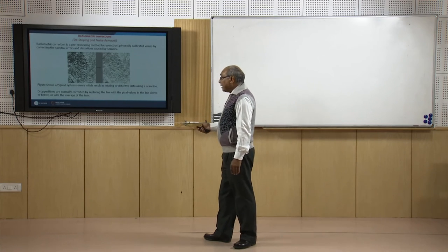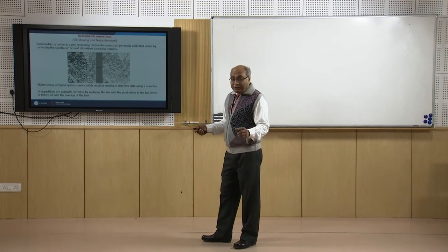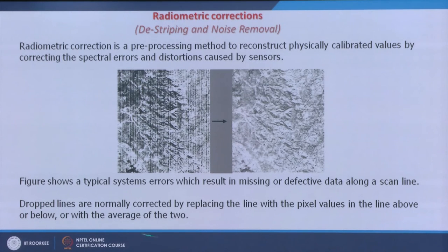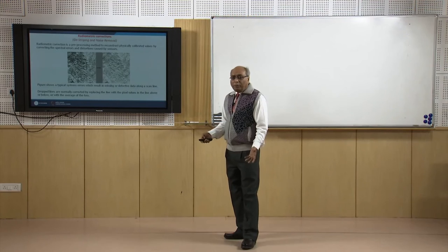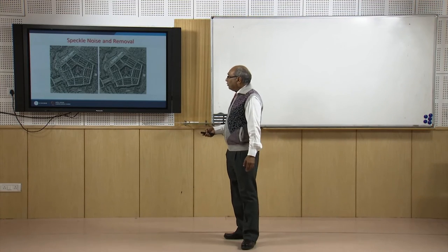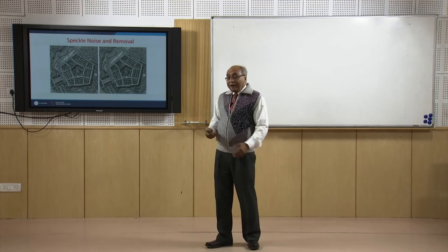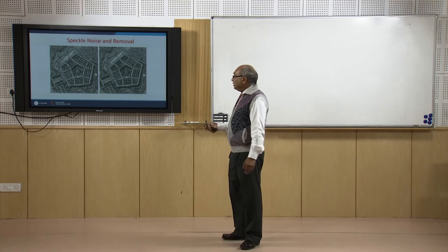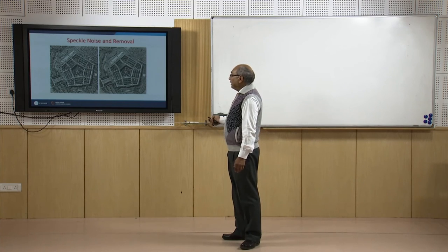Drop lines also occur — especially in thermal datasets — due to sensor saturation caused by high-temperature objects on Earth. The sensor takes time to cool down, resulting in drop lines which are commonly replaced. Manual correction is also possible if there are not many drop lines.